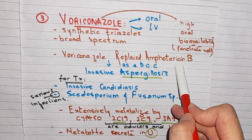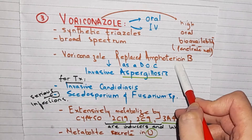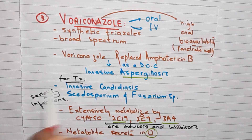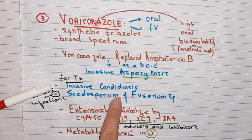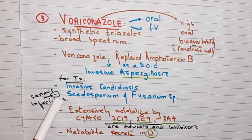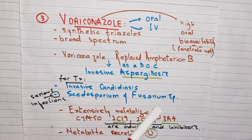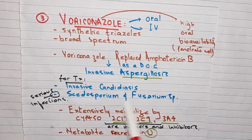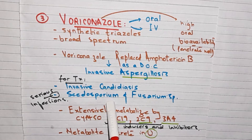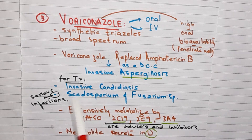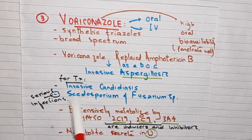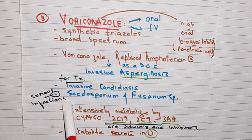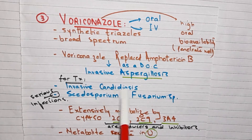Voriconazole has replaced other agents as the drug of choice for invasive aspergillosis. It can also be used for the treatment of invasive candidiasis, Scedosporium, and Fusarium species, which cause serious infections.